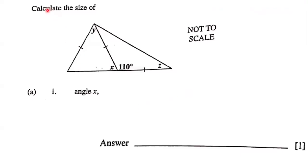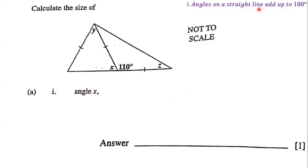Our goal is to calculate the size of angle X. Notice that angle X is on the side of this angle whose size is 110 degrees. We have a useful geometrical rule which states that angles on a straight line add up to 180 degrees. These two angles are on a straight line at a common point, so they should add up to 180 degrees.